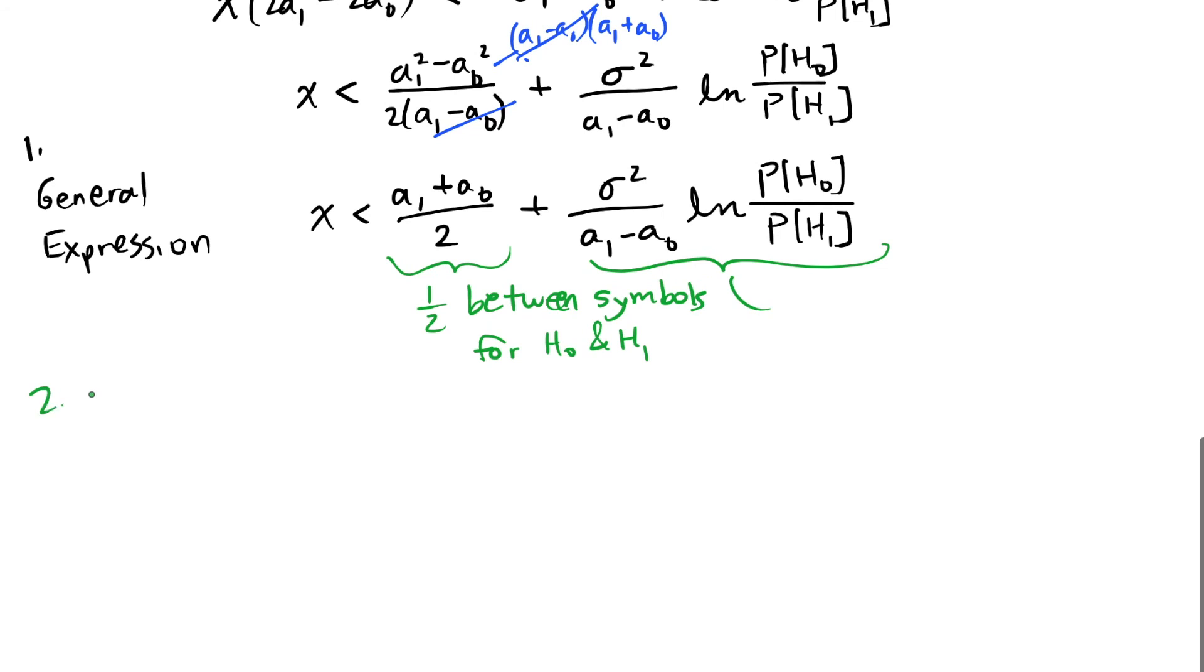Because when p of h0 is equal to p of h1, that is our symbols are equally likely, that log term is going to be the log of 1. So when we have equally likely symbols, this is our second expression. Our threshold test becomes this one, that x is just being compared to the threshold of halfway in between the two symbols.